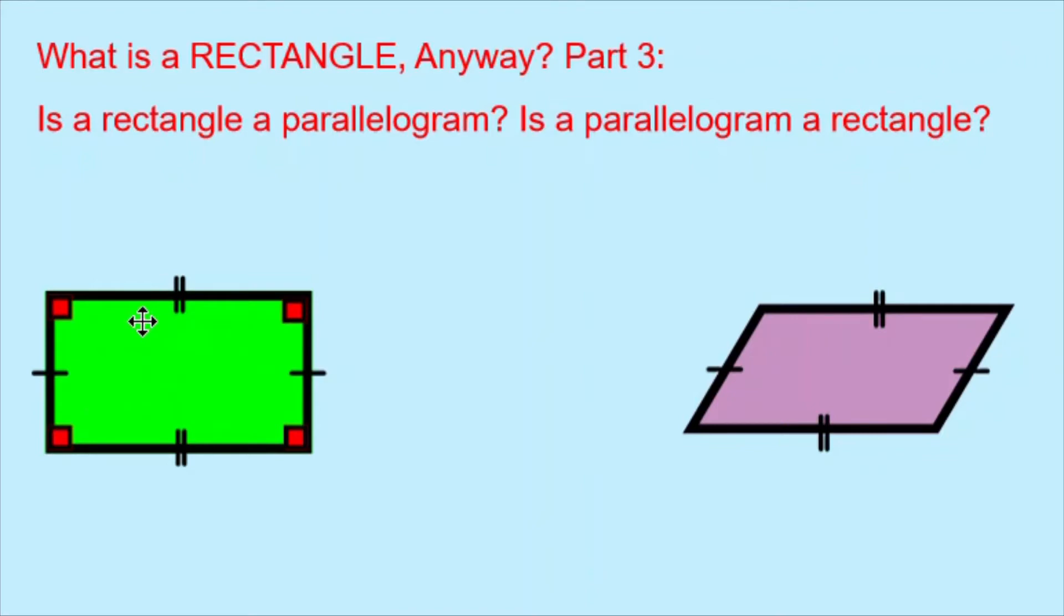The same thing is happening in the green rectangle but we also have these little squares in the corner that show us that all of the internal angles are 90 degrees.